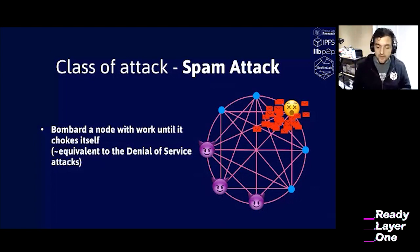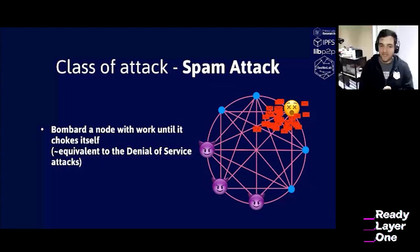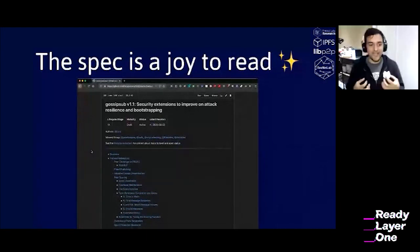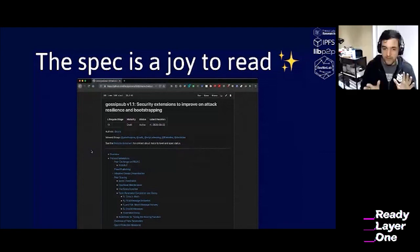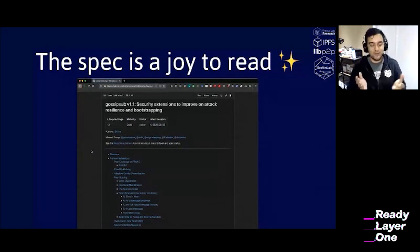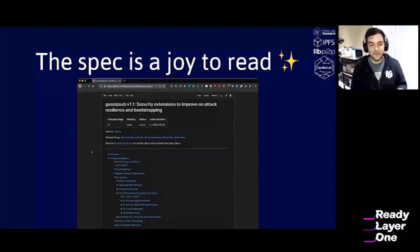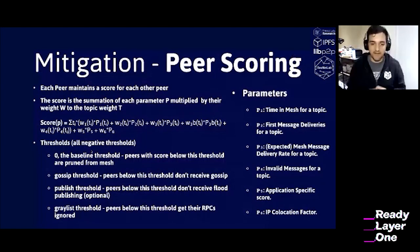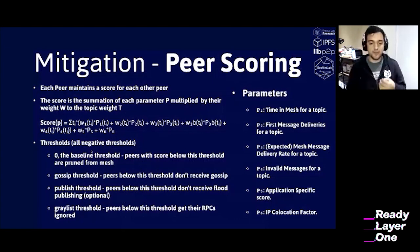So what are the mitigation strategies? Before going into each one, I want to say I'm really proud of the team — they worked really hard crafting a spec that is five pages long, super quick to read, with examples. I really recommend going through it. The first mitigation is peer scoring. Peers can evaluate other peers for their contribution in the network: time in the mesh, latency to deliver the first message, invalid messages sent for a topic, application-specific scores, and so on.